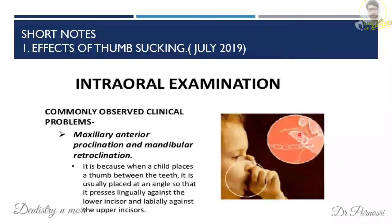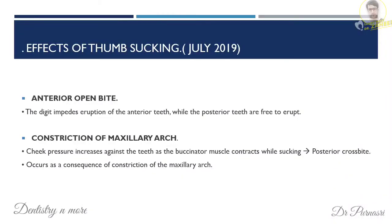When the child places the finger, anterior force is applied on the upper teeth — that is why they procline. The lower teeth retrocline because of the pressure from the thumb. Because the thumb is always placed in the mouth, there is an anterior open bite. Due to buccinator muscle contraction during sucking, there is a posterior crossbite and also constriction of the maxillary arch.